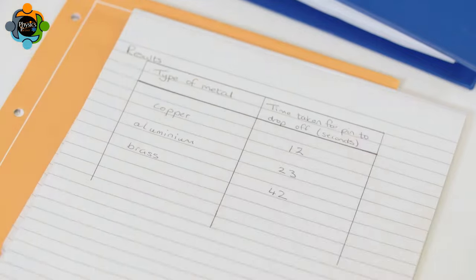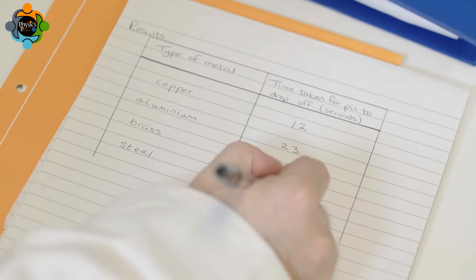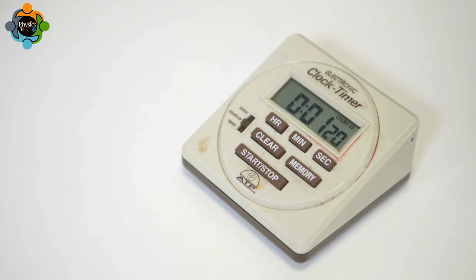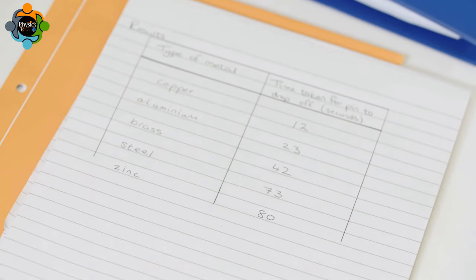Continue until all the drawing pins have dropped. You should end up with a table of results like this. Remember to turn off your Bunsen burner and allow the rods to cool fully before handling them.